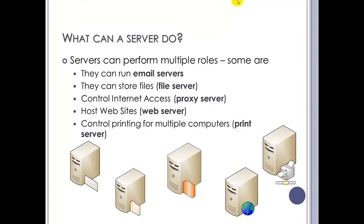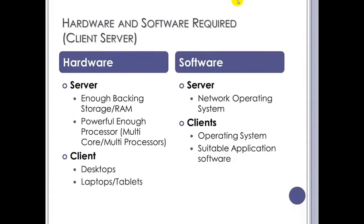You might have multiple servers doing multiple jobs — multiple file servers, etc. For a client-server network, hardware-wise you'll need a fairly powerful server, powerful enough for your needs, with sufficient backing storage, RAM, and a powerful enough processor. The clients themselves just need some kind of client machine — a desktop, laptop, or tablet. Software-wise, the server will need a server operating system capable of accepting connections from multiple machines. The clients will need the client version of the operating system and any suitable application software for whatever job they do.